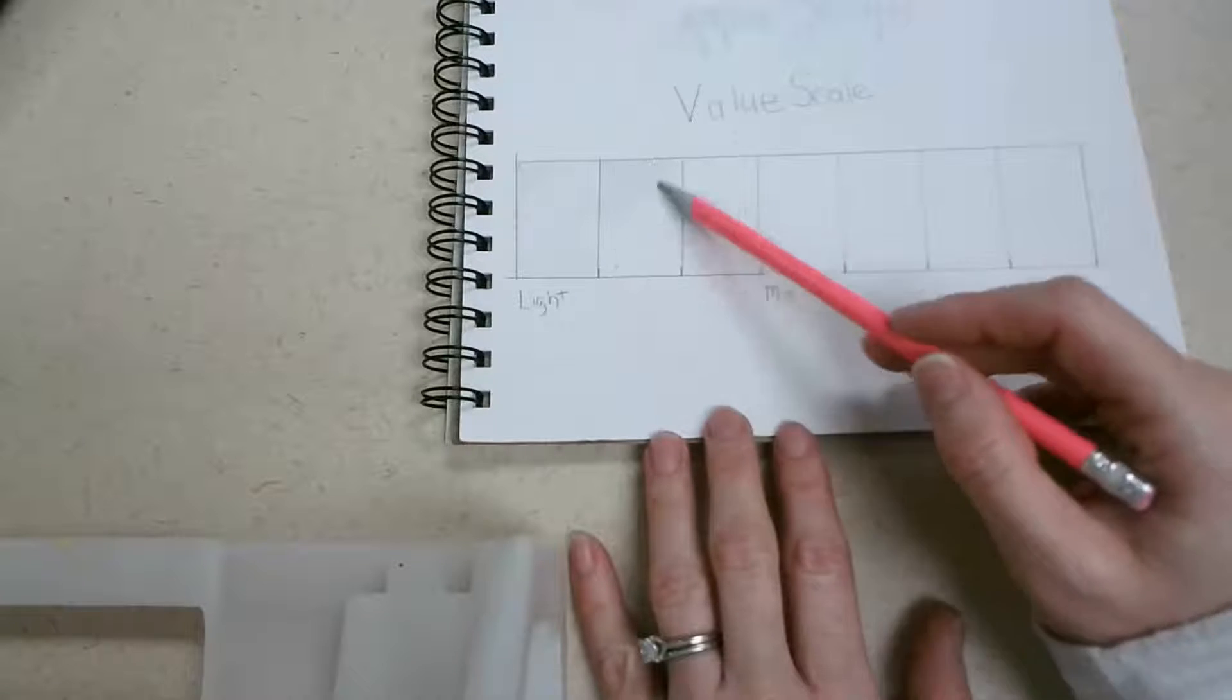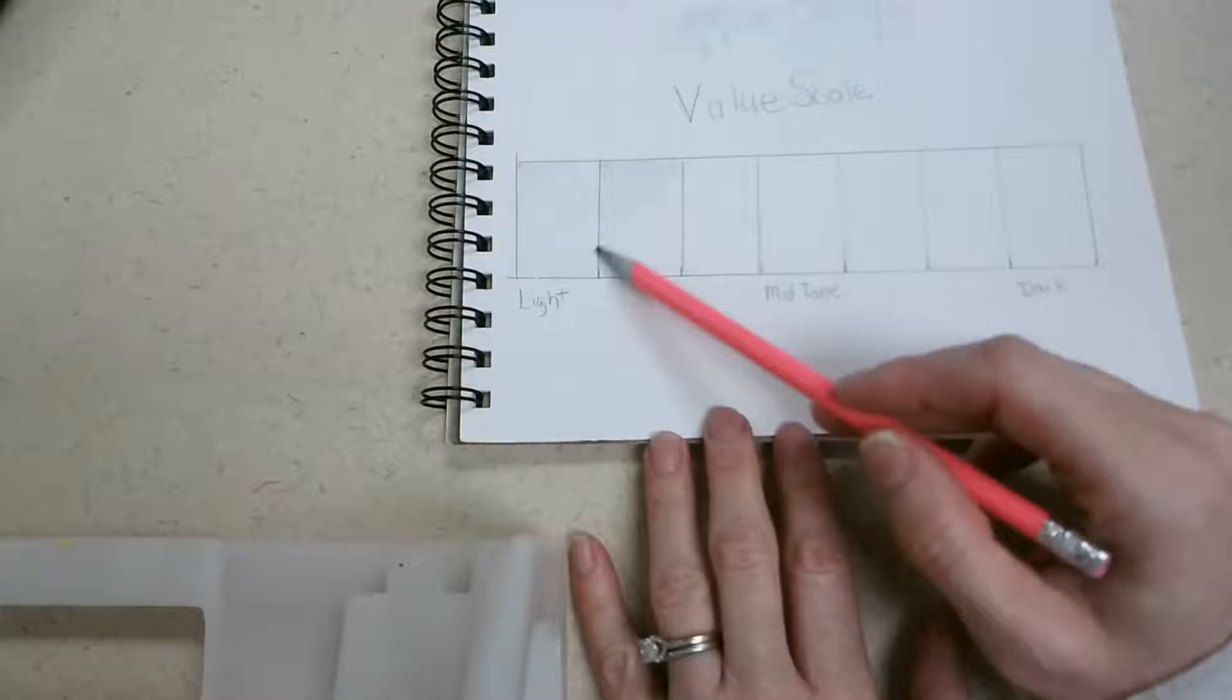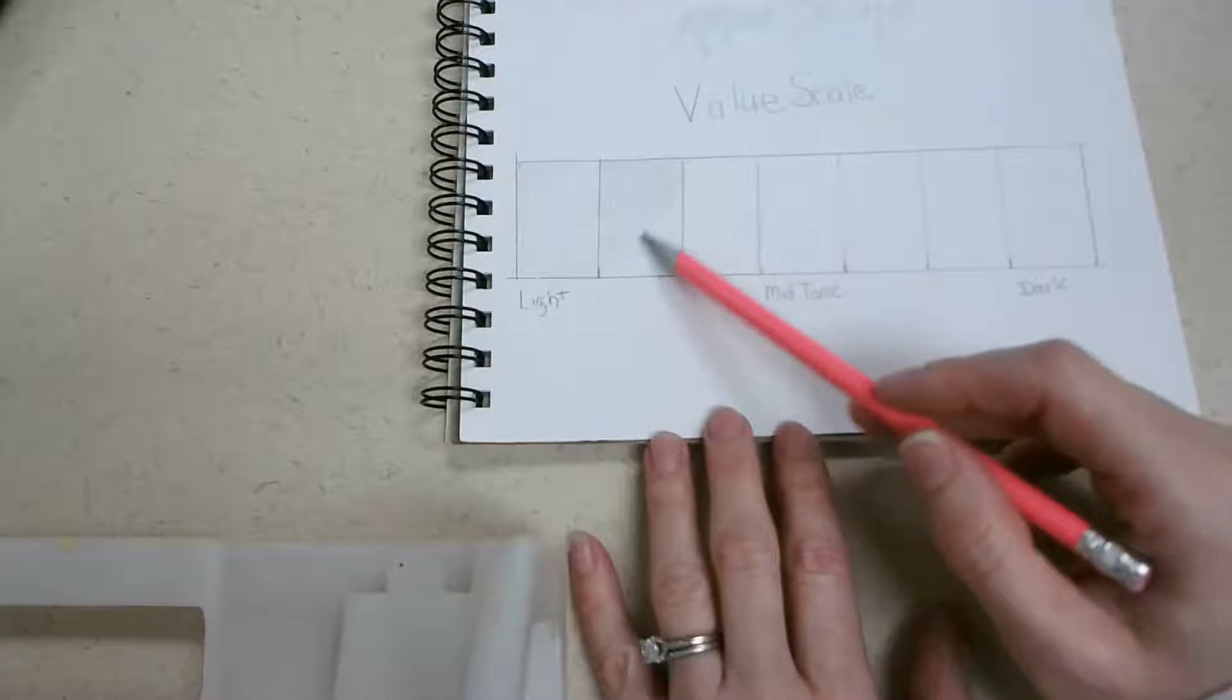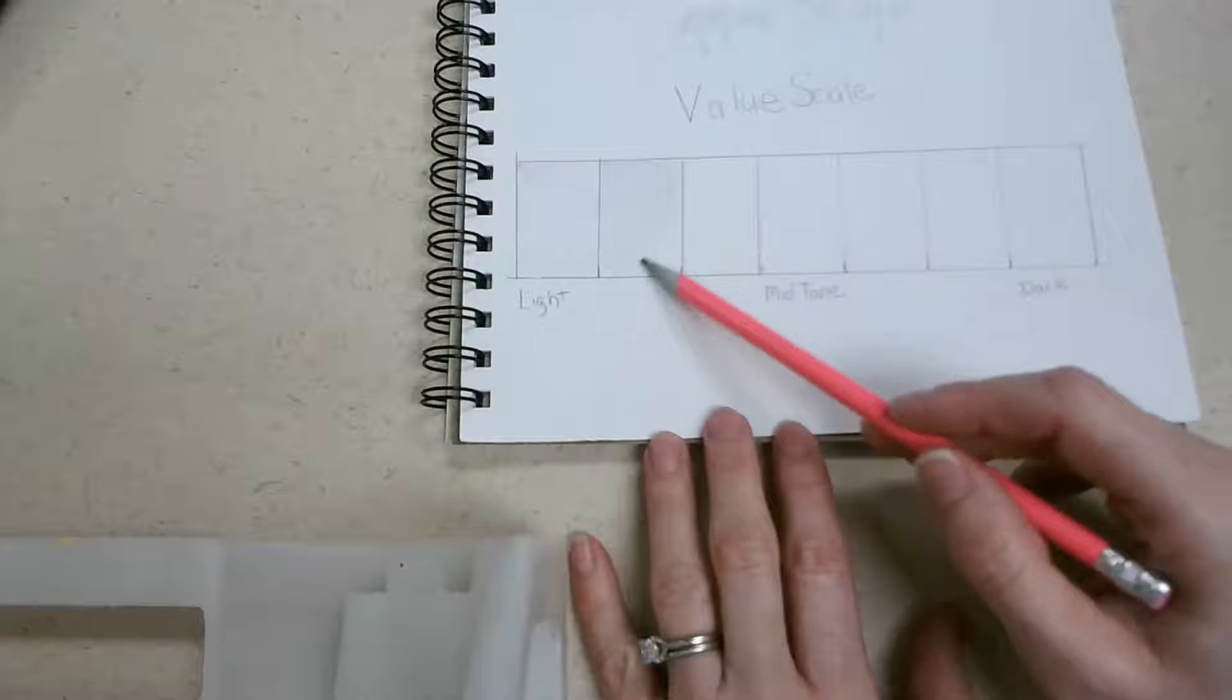Now you don't want to make it too dark too fast, so we're basically adding layer upon layer till we make our next value.